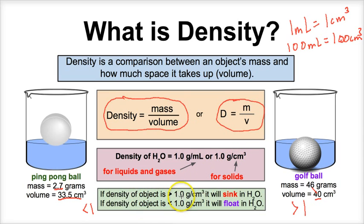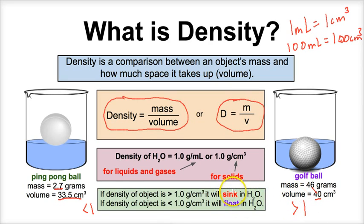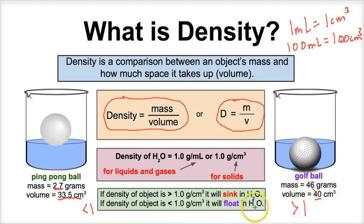If the density of an object is greater than the density of water — greater than 1.0 grams per cubic centimeter — it's going to sink. The golf ball has a density greater than the density of water and therefore will sink. The ping pong ball is going to float because it has a density that is less than 1.0 grams per milliliter or cubic centimeter. Anytime the density of an object is less than one, it will float in water.